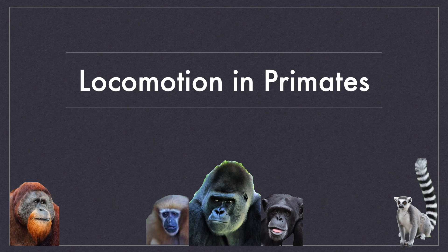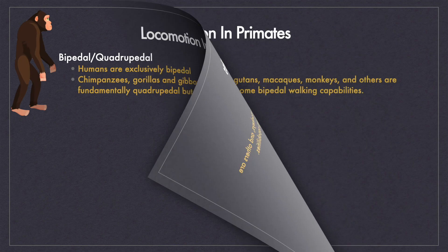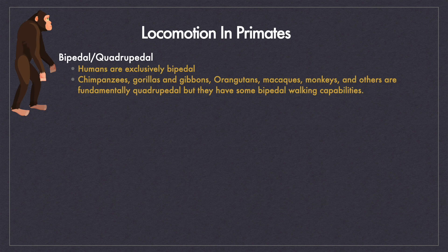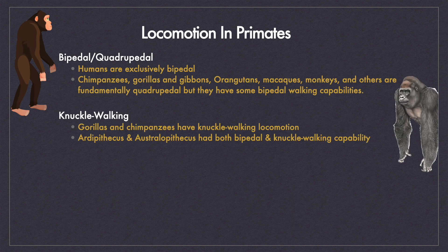Let's see what kind of locomotion is practiced by primates. Humans are exclusively bipedal. Chimpanzees, gorillas, orangutans, monkeys, and other primates are fundamentally quadrupedal, but they have the ability to stand and walk on two feet for short distances when required. Gorillas and chimpanzees bend the fingers of their hands while walking quadrupedally — this form of walking is called knuckle walking. It is interesting to know that early hominins, Ardipithecus and Australopithecus, both had bipedal and knuckle walking capabilities.